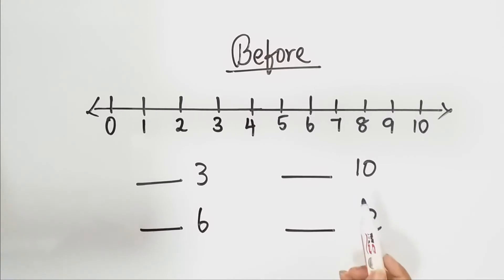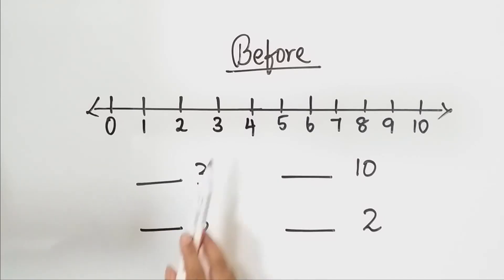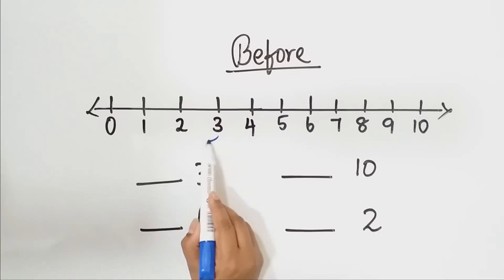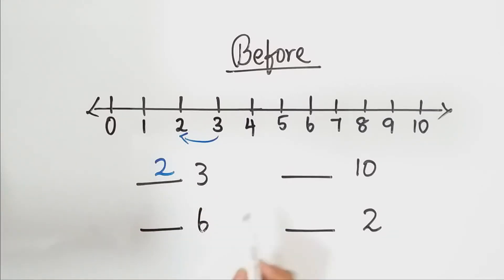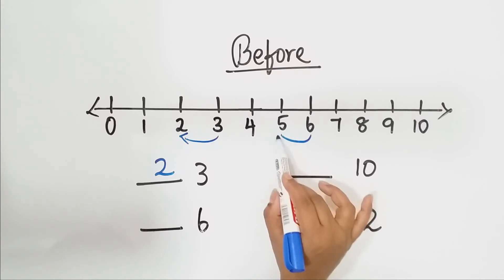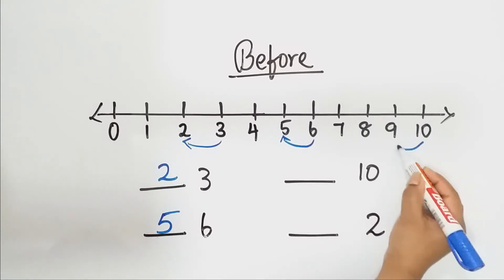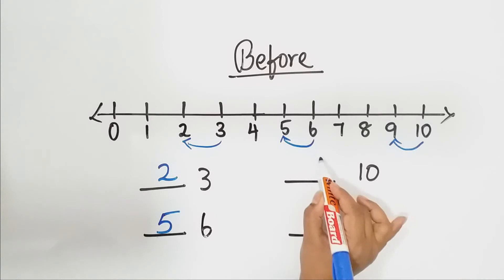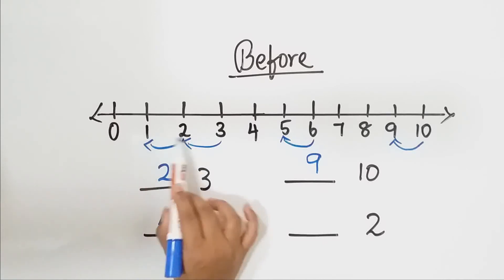So children, now we are going to do a small exercise in before number. Can you all see this number line? Seeing this number line we are going to do the exercise now. Which is the before number of three? Before number of three is two. Very good children. Now can you tell me which is the before number of six? Before number means we have to go backwards. So it is one.